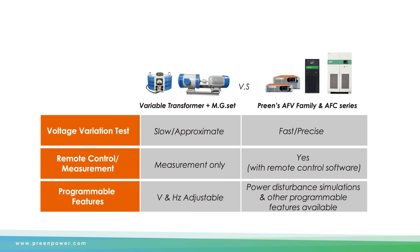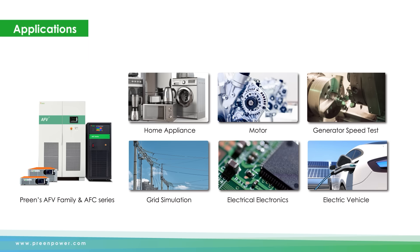Some users purchase motor generators and variable transformers to adjust voltage or frequency. Programmable power sources can meet the same features and moreover offer more advanced functions. For users who need frequency variation testing in different fields such as home appliances, electrical electronics, motors, and electric vehicles, frequency converters or programmable AC sources are great solutions.